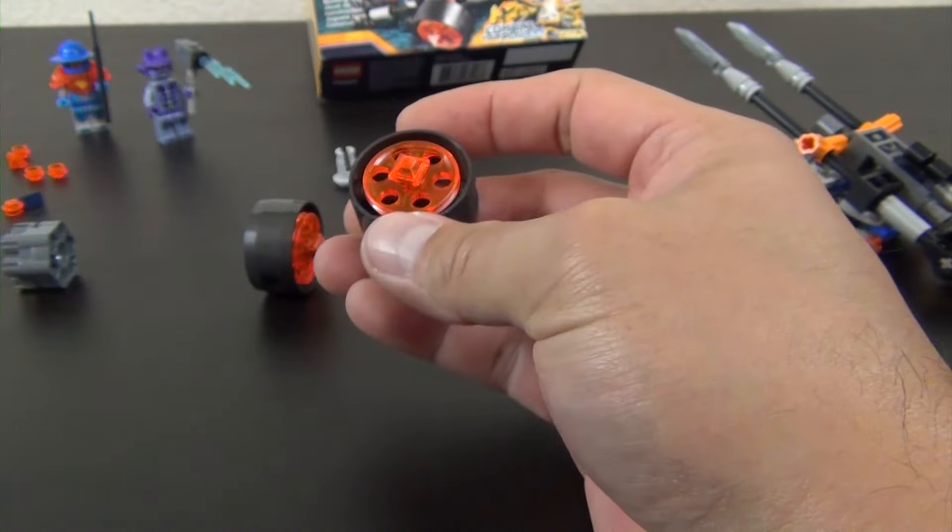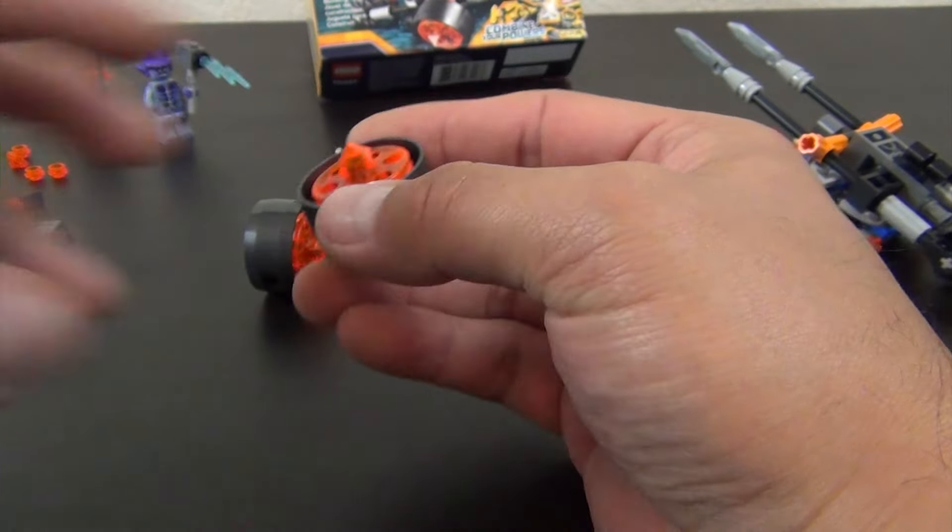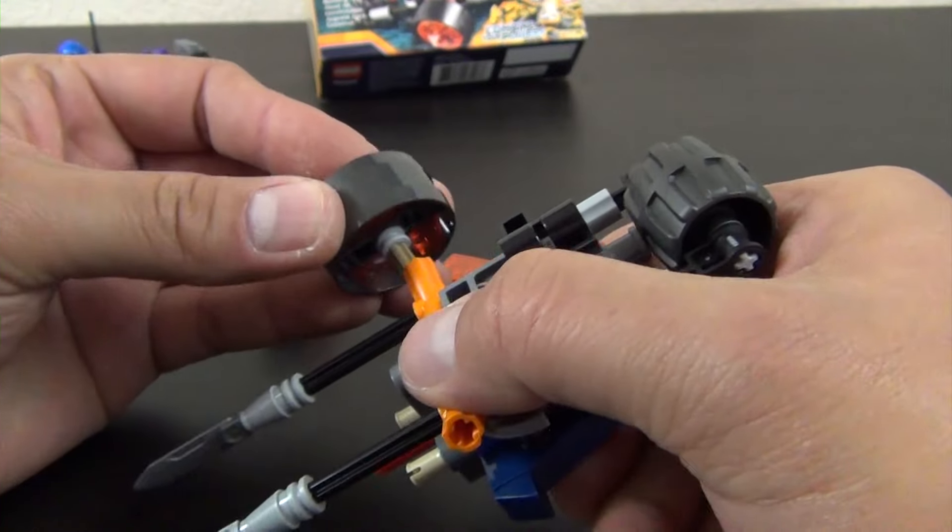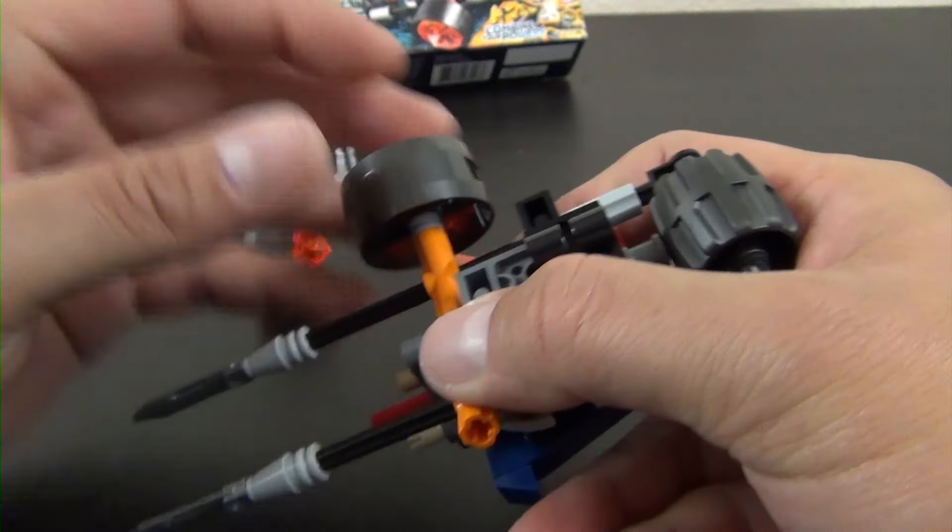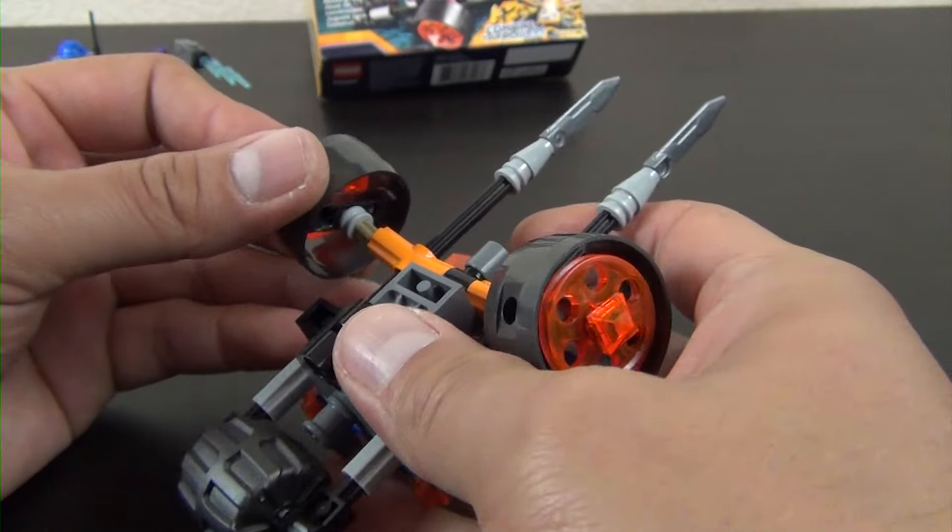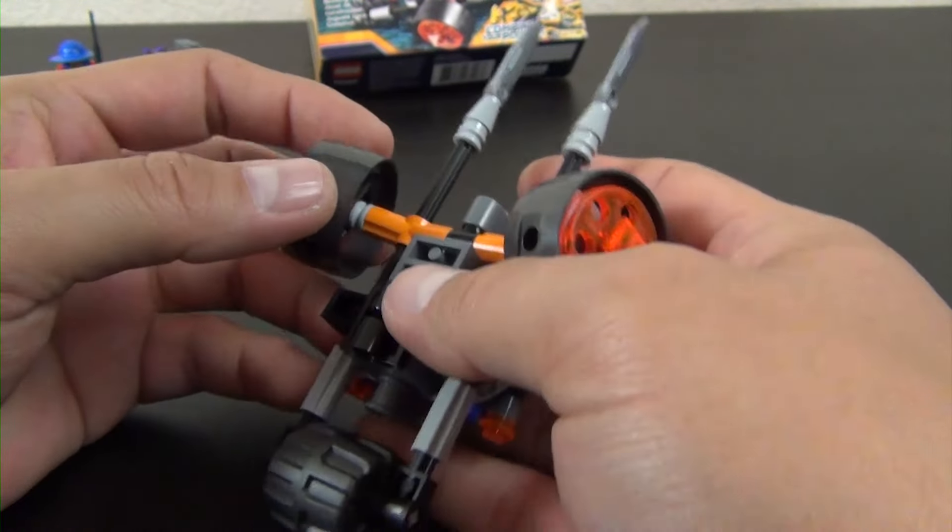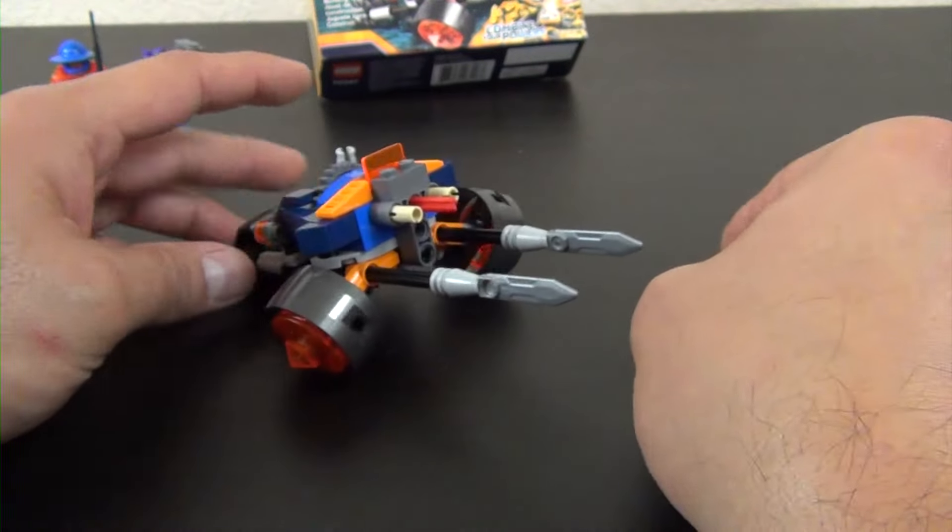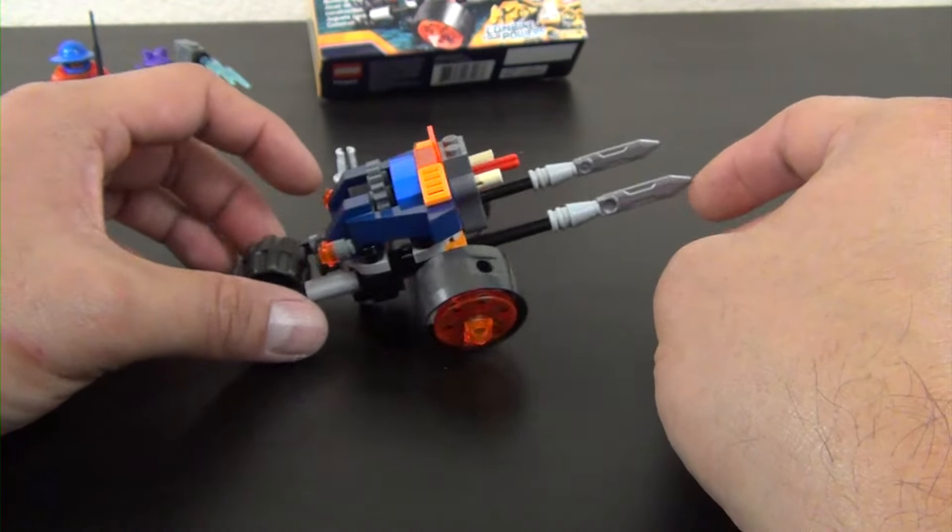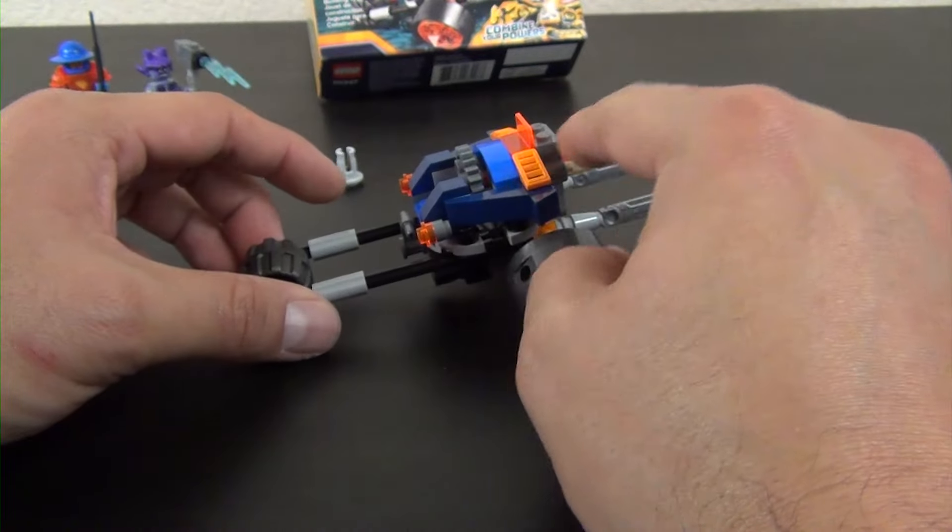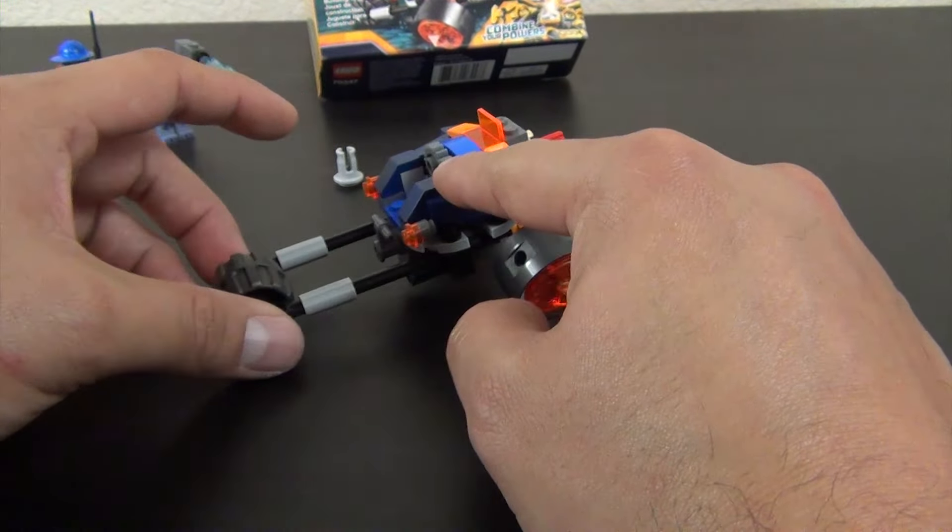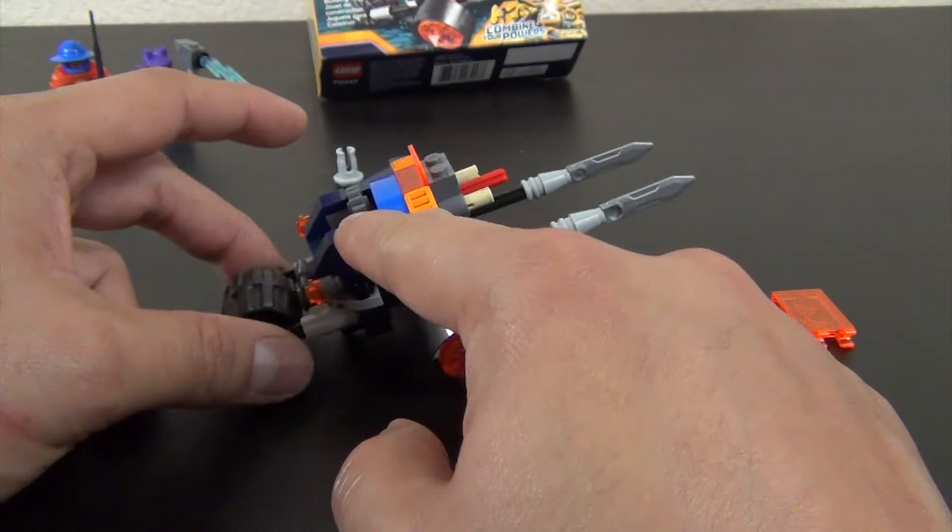Pyramid plate there, pyramid plate there. All right, so these pop onto these axle joiners we put on real early on. See how it kind of creates this tripod style piece. Little stabber still works.